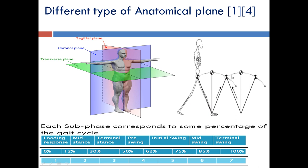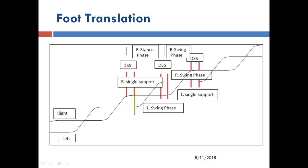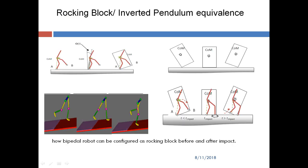Loading response covers 0–12% of the gait cycle, mid-stance 12–30%, and so on. Broadly you can observe stance phase and swing phase. From the foot translation of left and right foot, you find very few instances of double support — DSS stands for double support phase. When one foot is in the air and another on the ground, you find a spike in the signal. Left foot support, right foot support, and double support appear, with only about 12% of the gait cycle being double support.